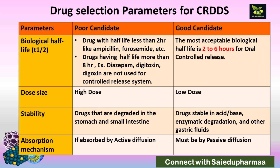Biological half-life is the next parameter. If the biological half-life is too low or too high, both conditions are not suitable. If it is very short, the dose or dosing frequency will be very high. If the half-life is very long — more than 8 hours — there is no need to prepare a controlled release system. The most acceptable biological half-life is 2 to 6 hours for oral controlled release systems.